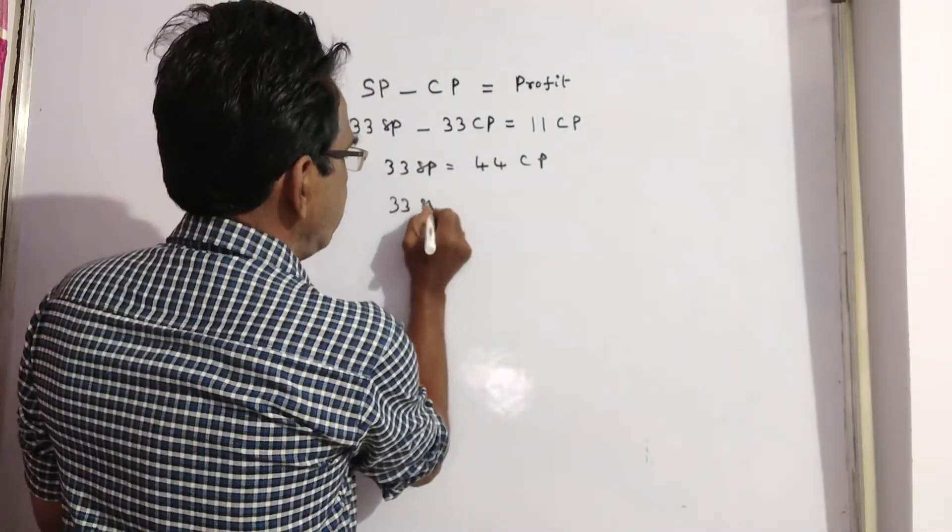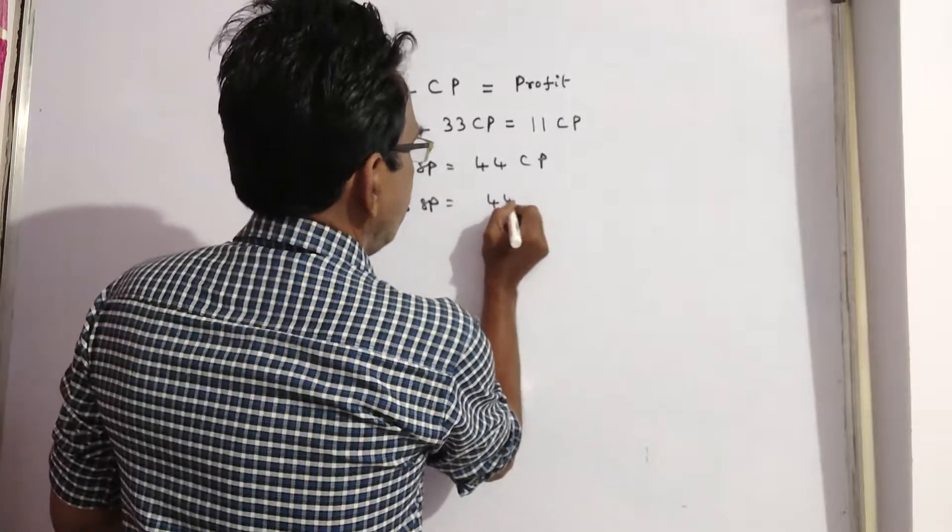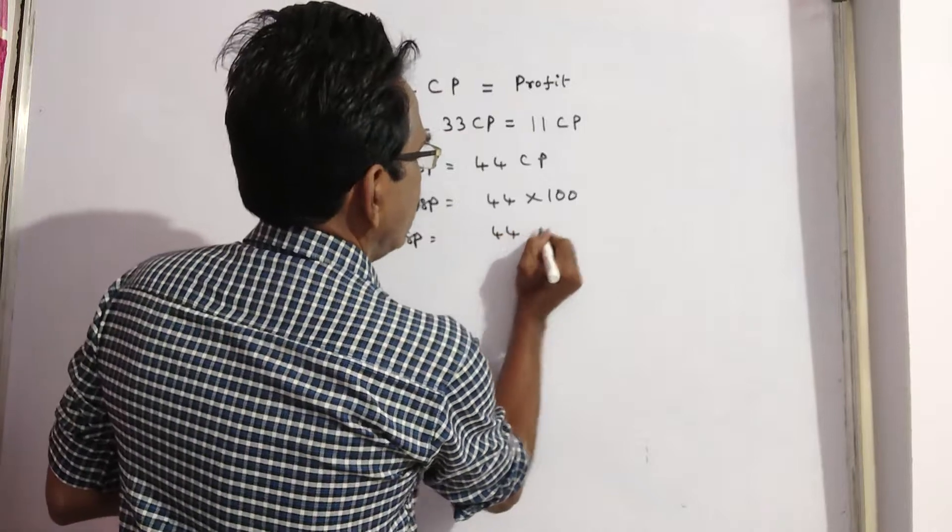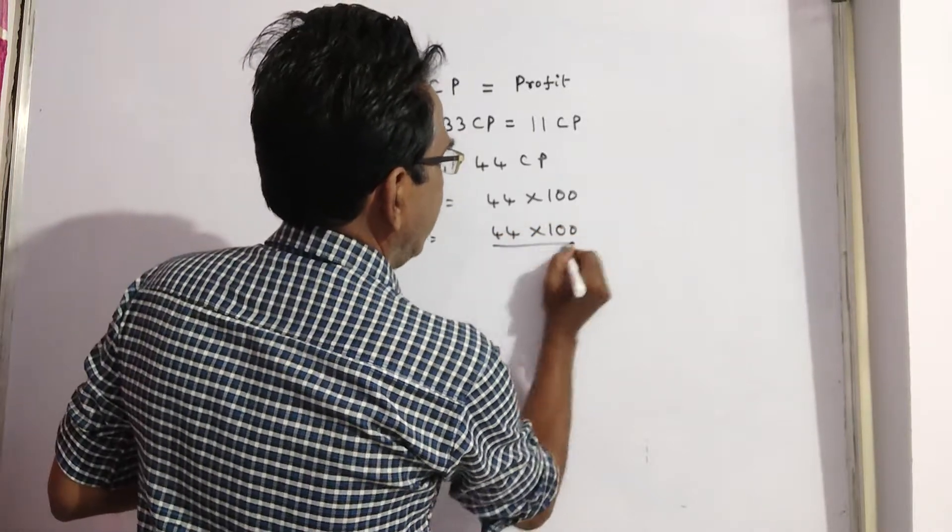So, 33 SP is equal to 44 into cost price 100. Now, SP is equal to 44 into 100 by 33.